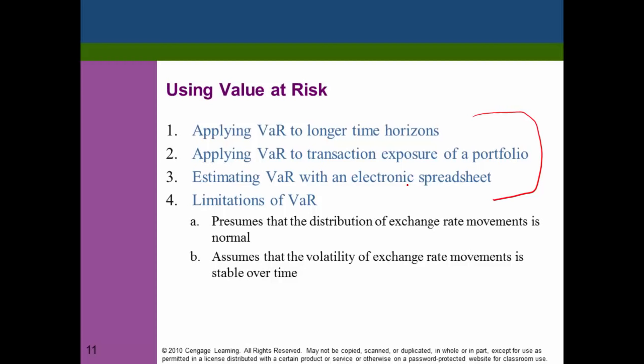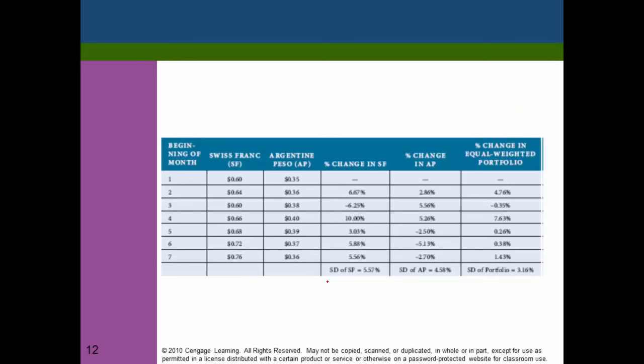There are two main limitations of the value at risk method. First, it presumes that the distribution of exchange rate movements is normal, which may not be true in reality. Second, it assumes that the volatility of exchange rate movements is stable over time — meaning the standard deviation is constant — which also may not hold exactly.